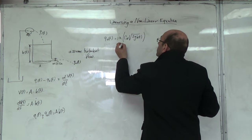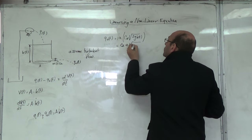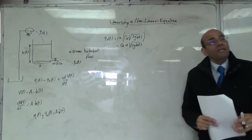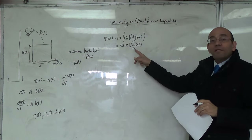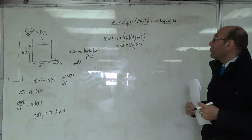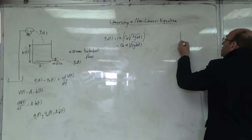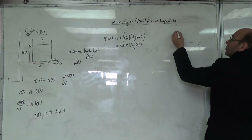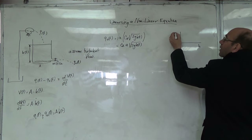So here, Q_out(t) = C_D * a * sqrt(2g * h(t)). We need to do linearization because this is a non-linear model and we don't want to work with it directly. After linearization, we will take the next step and obtain a relationship between h and flow.